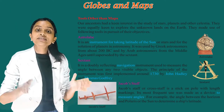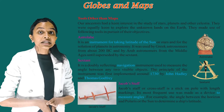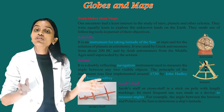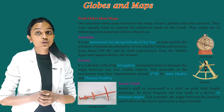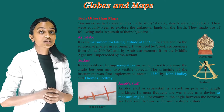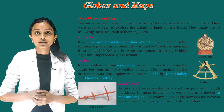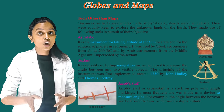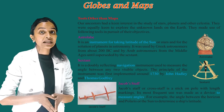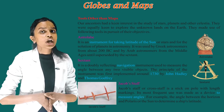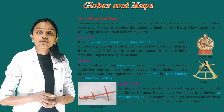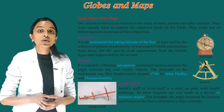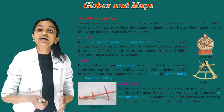Tools other than maps: Our ancestors had a keen interest in the study of stars, planets and other celestial bodies. They were equally keen to explore the unknown lands on the earth. They made use of the following tools. The Astrolabe is an instrument for taking latitude using the sun or a star, and for the solution of problems in astronomy. It was used by Greek astronomers from about 200 BC and by Arab astronomers from the Middle Ages, until it was superseded by the sextant.